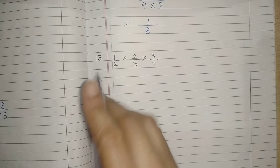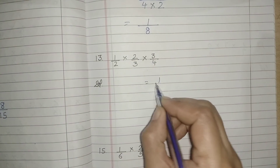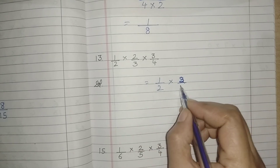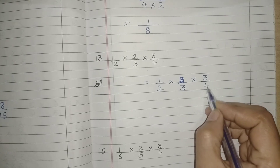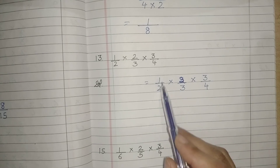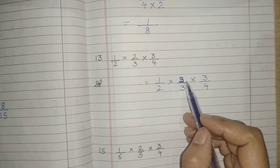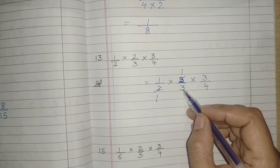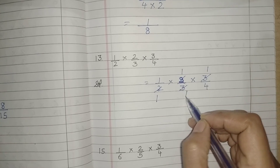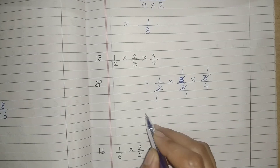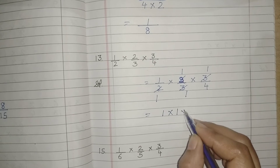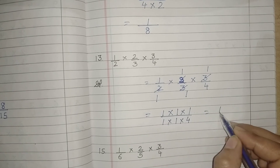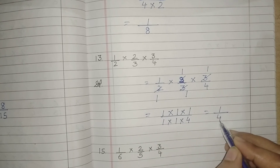Here we have 3 fractions together. The rule is the same whether we are multiplying 2 fractions or 3 or more. We will see which numbers can cancel cross or vertically. This 2 and this 2 cancel: 2 ones are 2 and 2 ones are 2. Then 3 twos are 3 and 3 ones are 3. No further cancellation. Multiply numerators: 1, 1, 1 — product is 1. Denominators: 1, 1, 1, 4 — product is 4. So the answer is 1 upon 4.